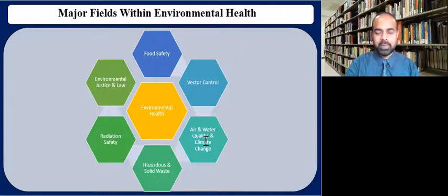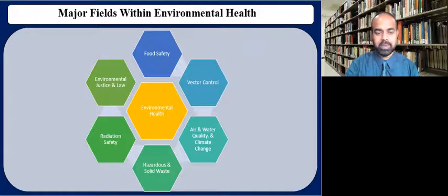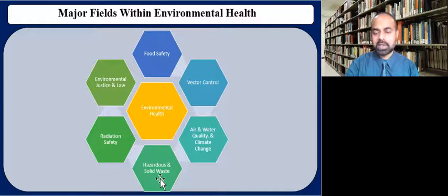Air and water quality and climate change focus on monitoring and enforcing government regulations for protecting the air and water and preventing climate change. The potential threat to human health posed by contaminated air, water, and changing climate cannot be underestimated. Hazardous and solid waste focus on overseeing household waste collection and disposal, since improper disposal of household hazardous waste can pollute the environment and pose a threat to human health.